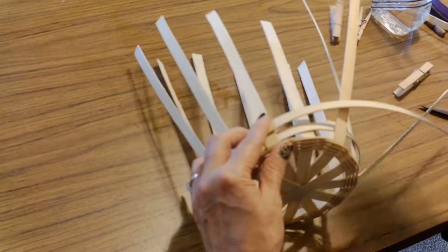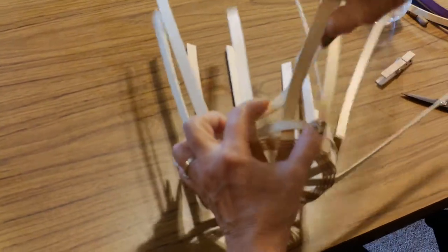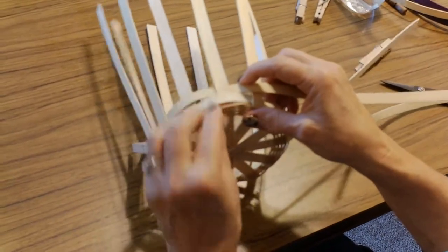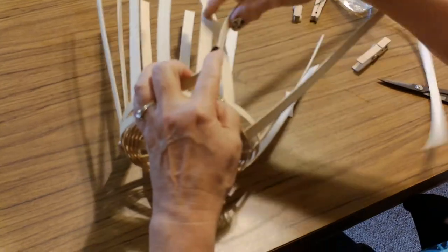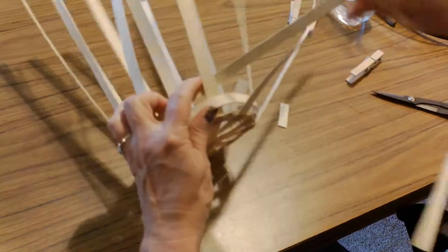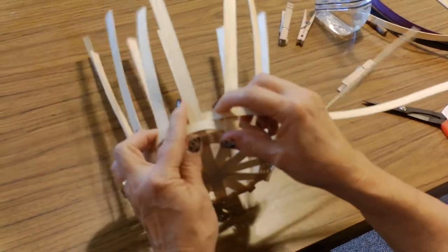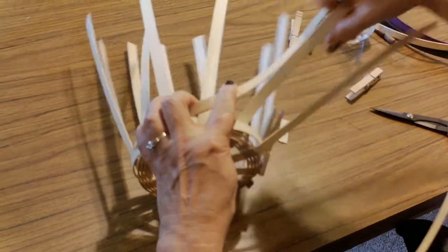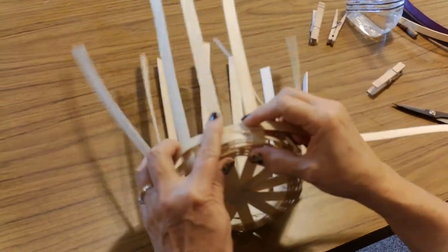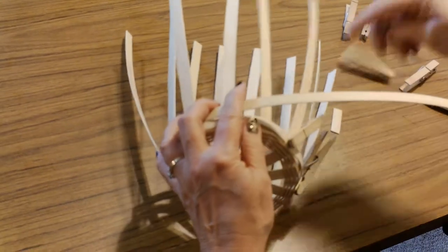Over, under, over, under. Pack this down as you go. You don't want spaces in between these rows, so you push them down.